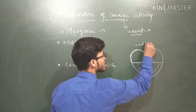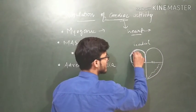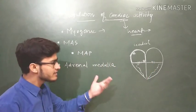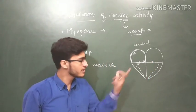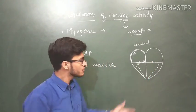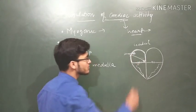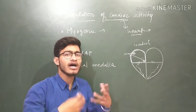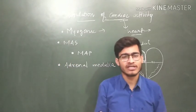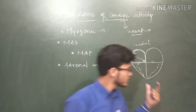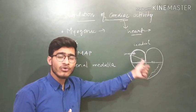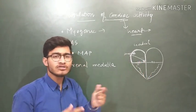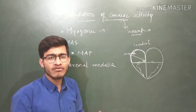In this chamber, there are nodal tissues. We have already discussed about the nodal tissues which is present over here and over here. There's SA node which is basically the pacemaker, and AV node. So, these nodal tissues used to regulate the activity of heart intrinsically.